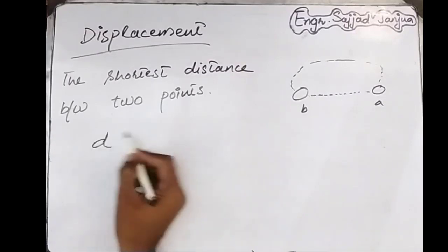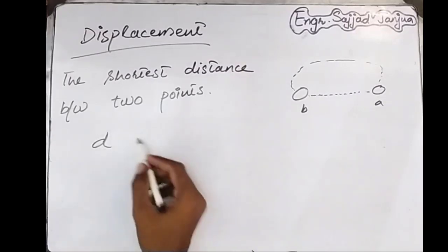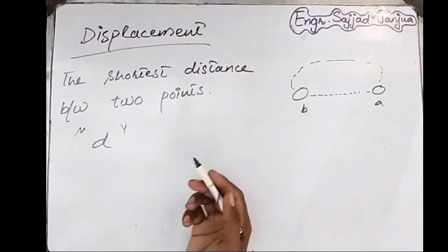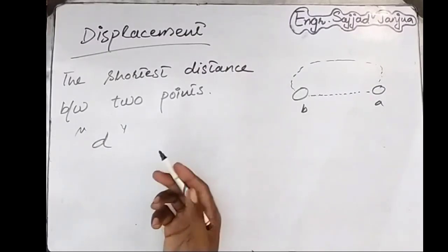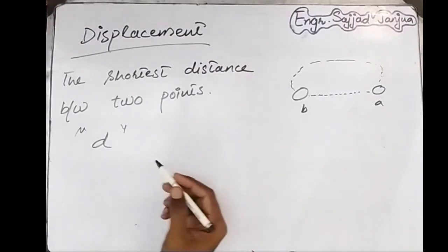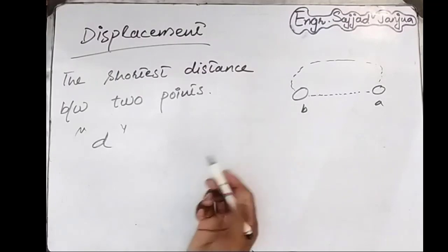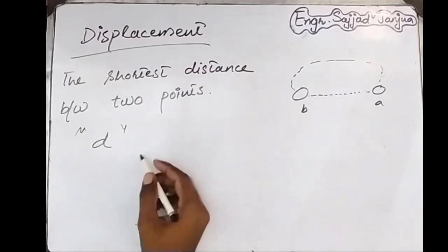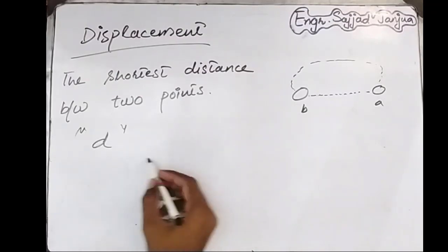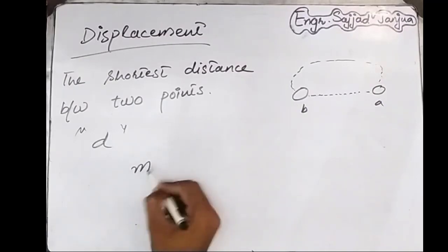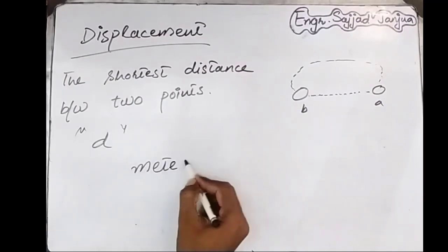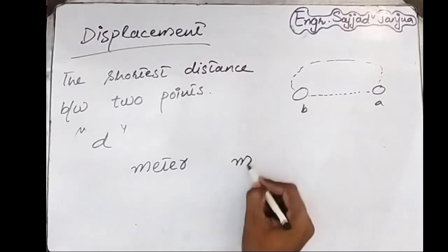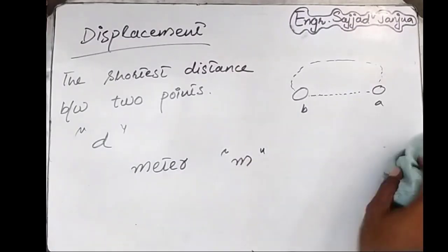Displacement is denoted by D and it has the same unit as distance. So displacement is also measured in meters, denoted by m.